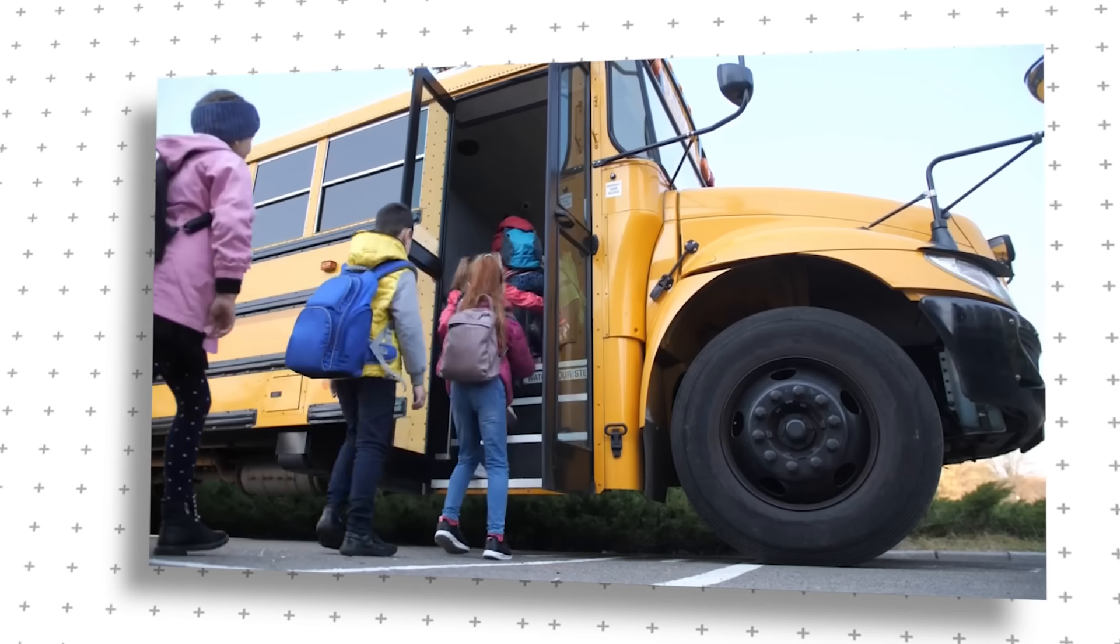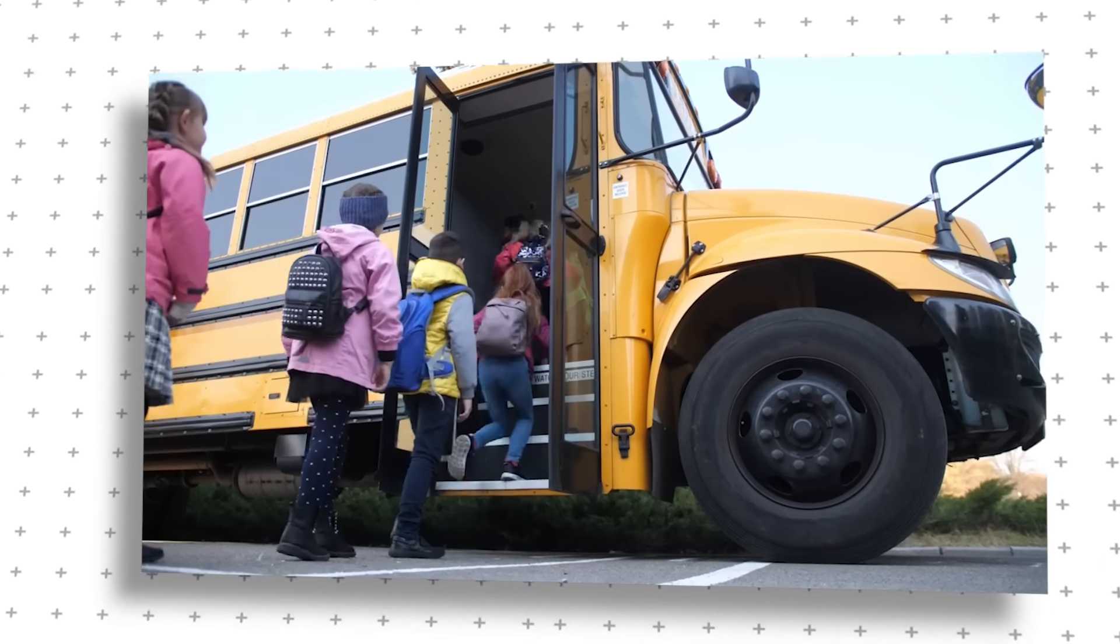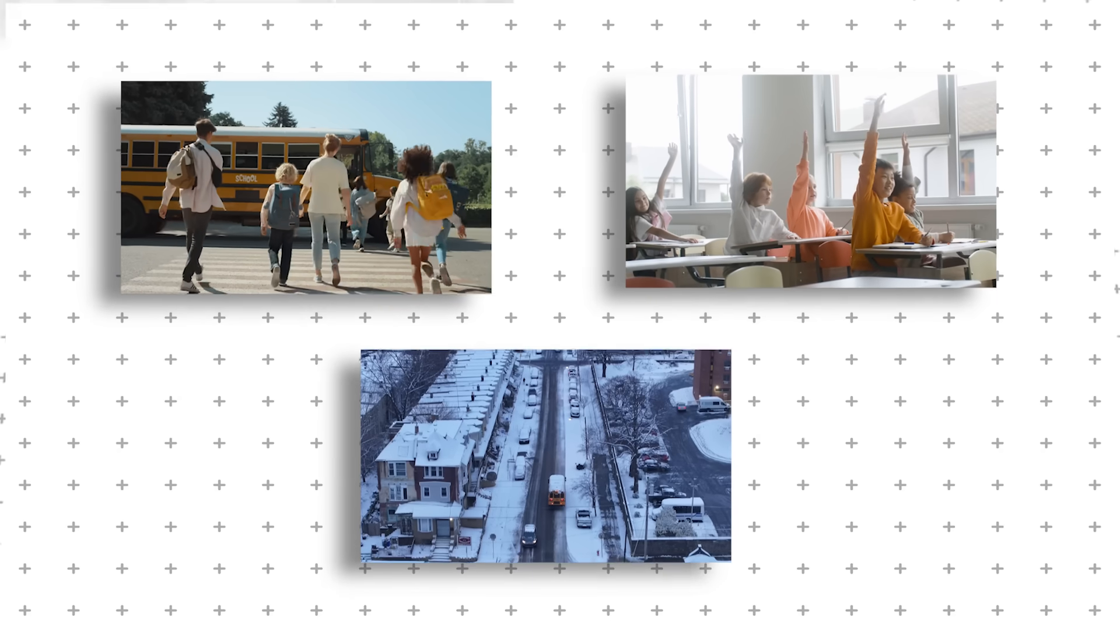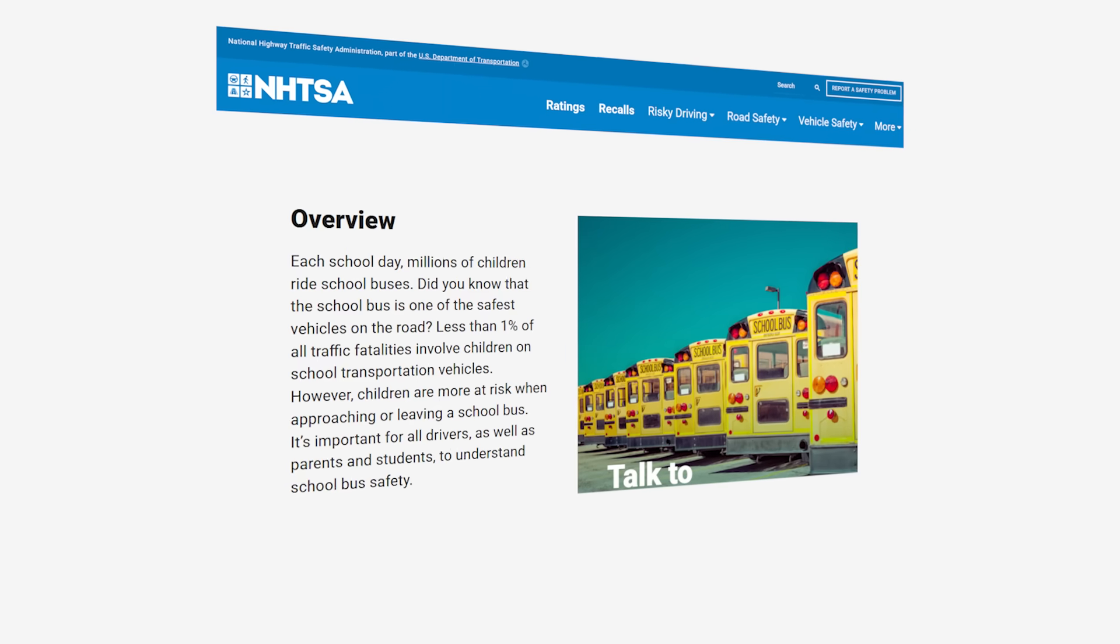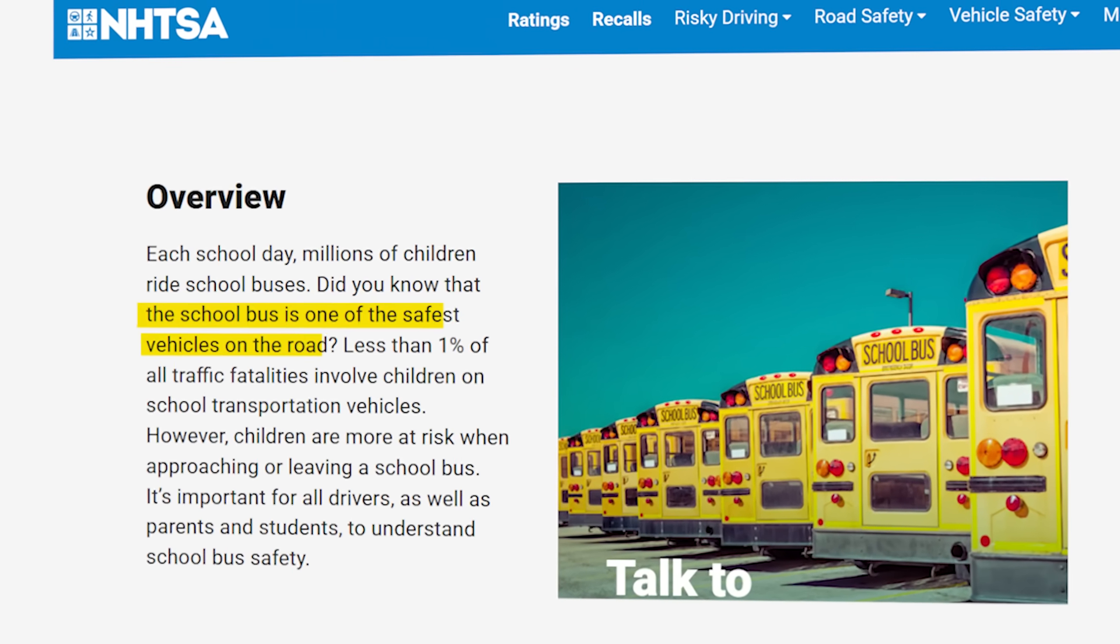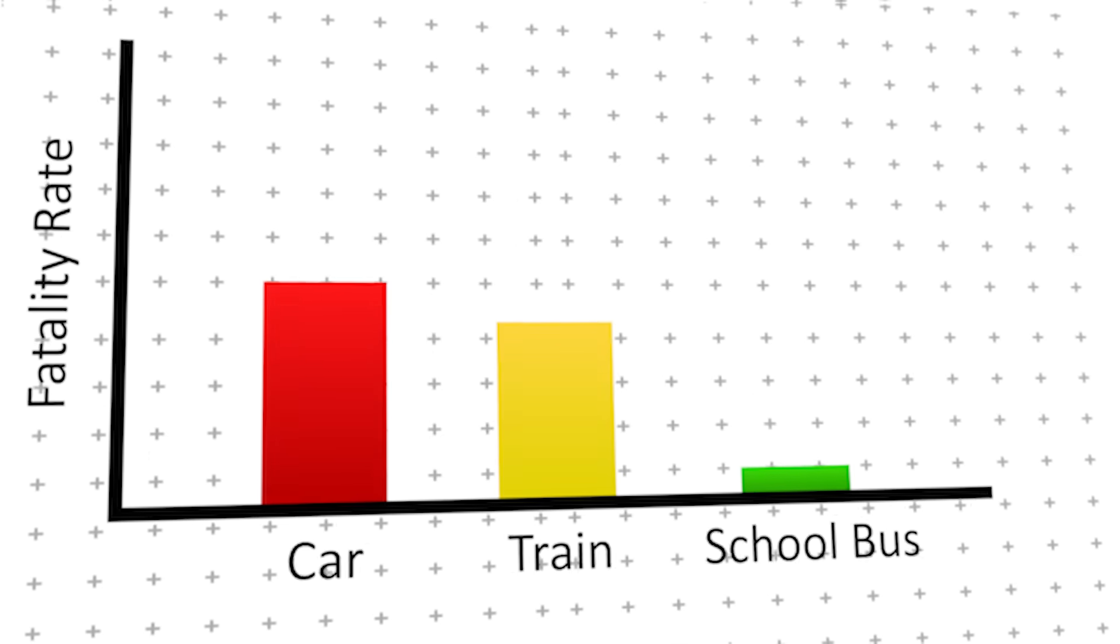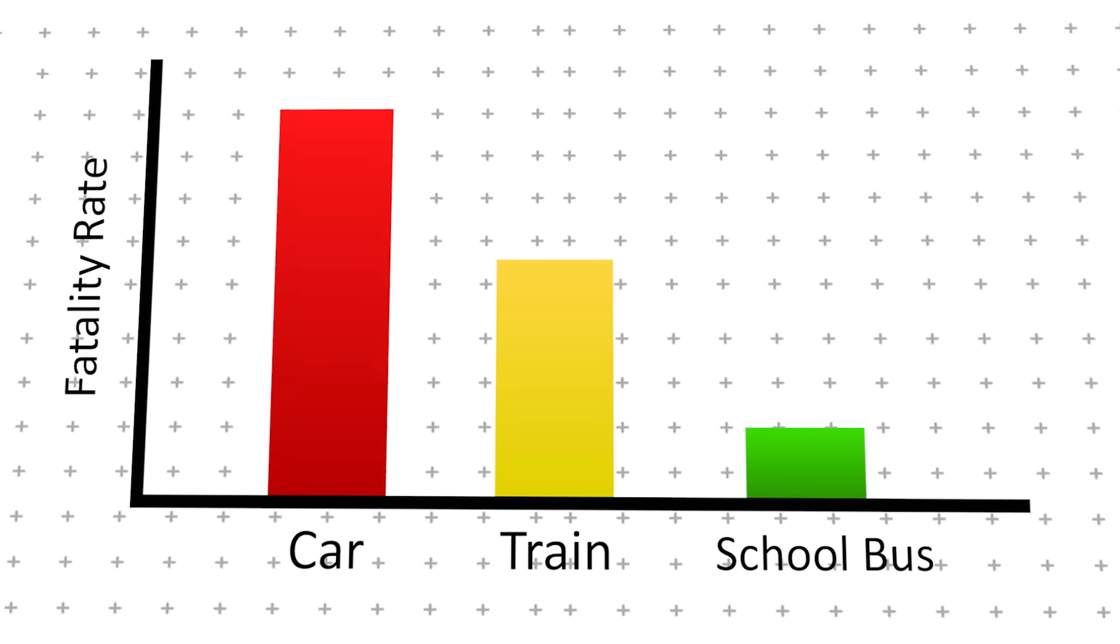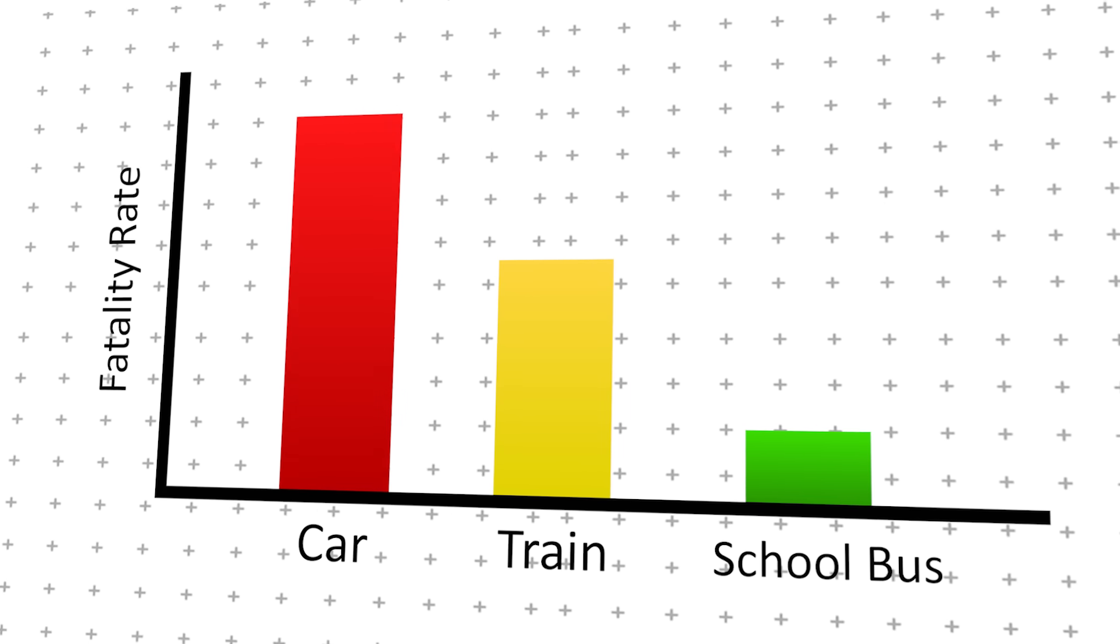Every morning, millions of students climb into school buses without a second thought. Parents trust them, schools rely on them, and they blend into the background of daily life. But what if I told you that school buses aren't just safe, they're the safest vehicles on the road? Statistically, a child is 70 times more likely to arrive at school safely on a bus than in a car. That's not an accident, that's engineering.